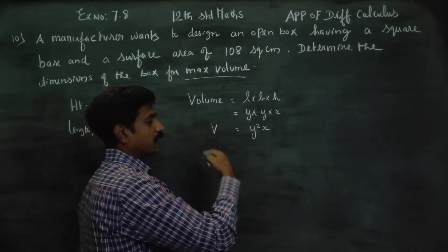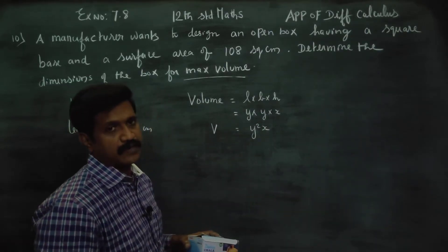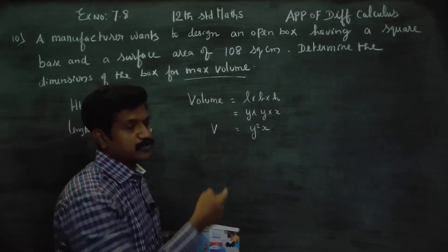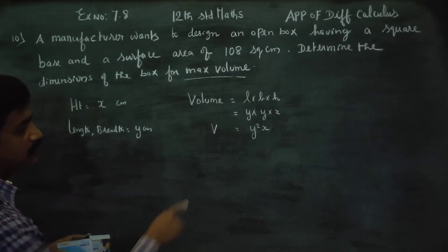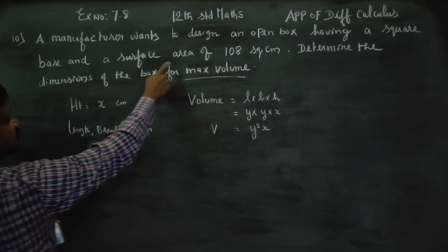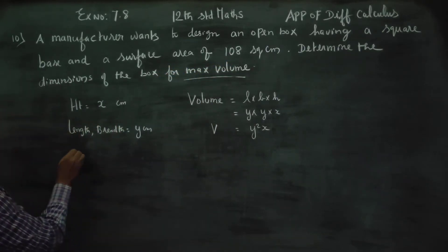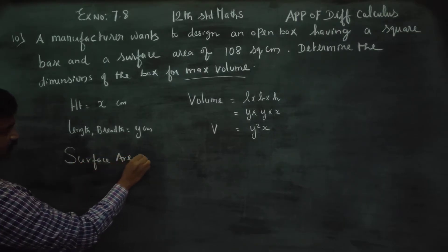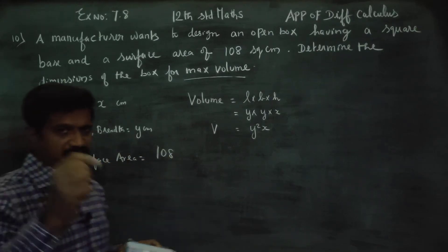The volume must be a function of only one variable. So we need to use the surface area constraint to convert. The surface area is 108 square centimeters. We will use this to express x in terms of y.